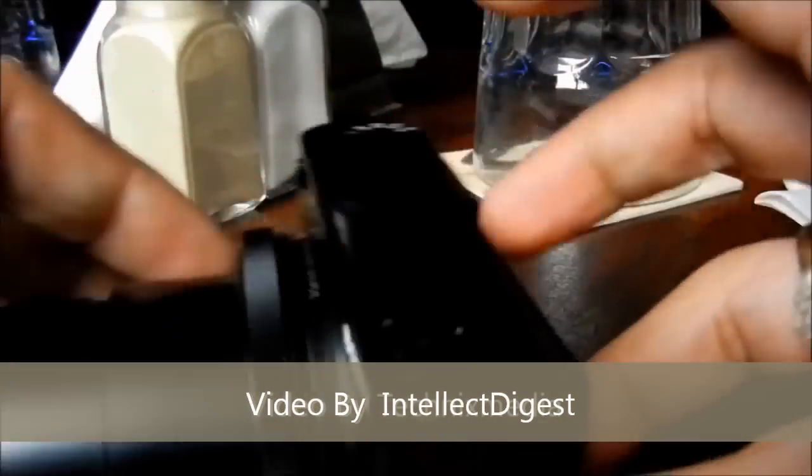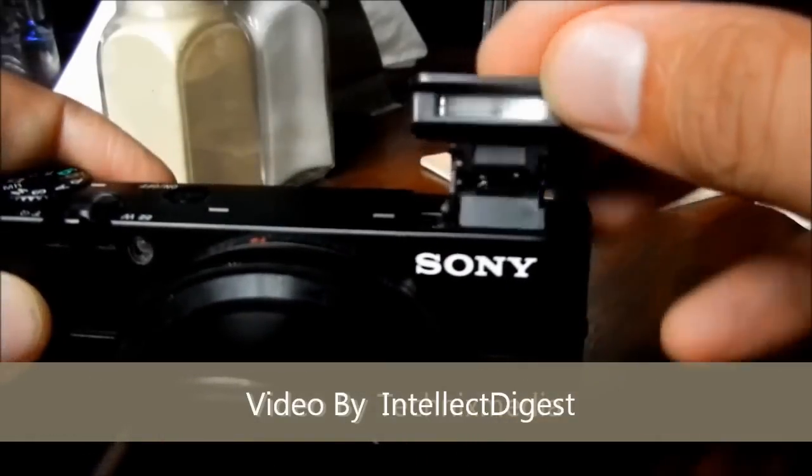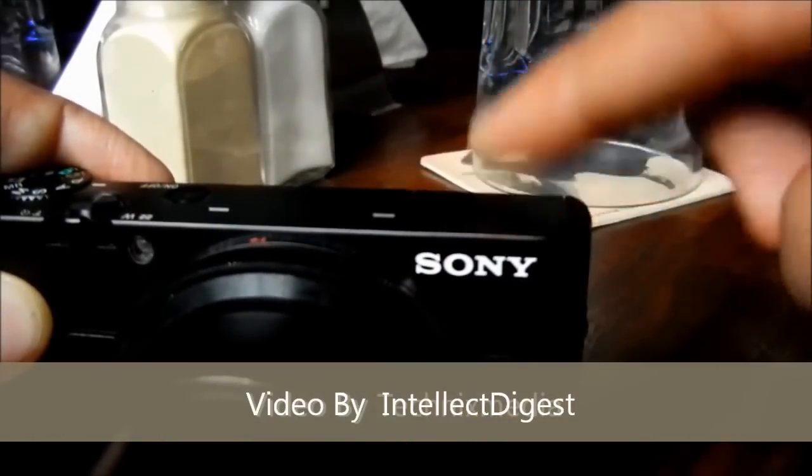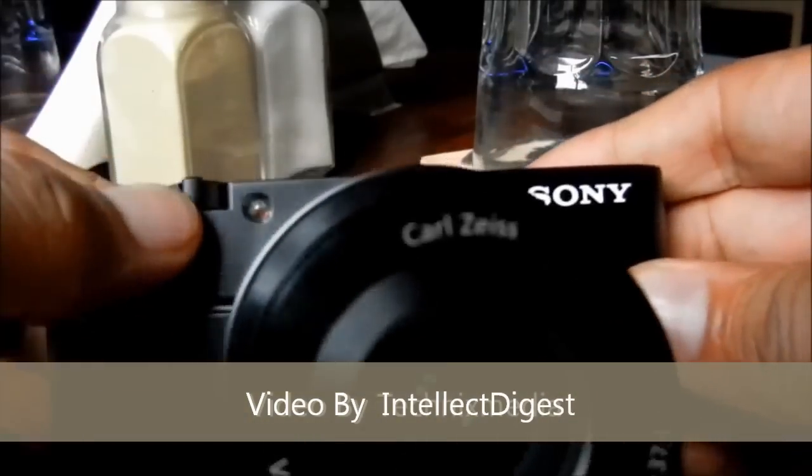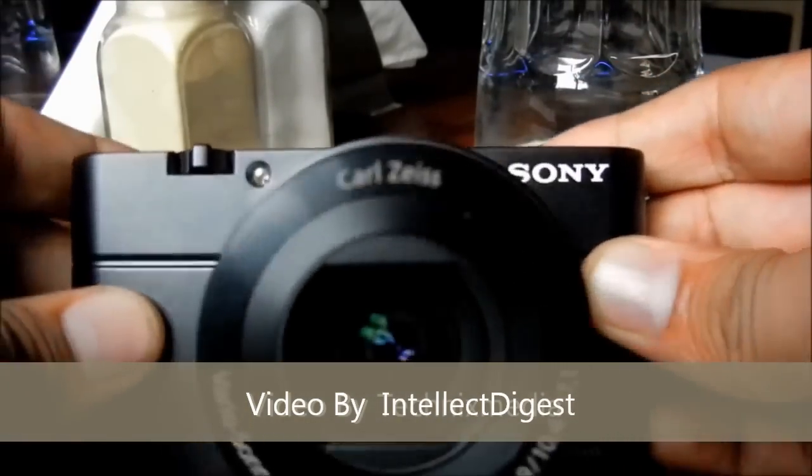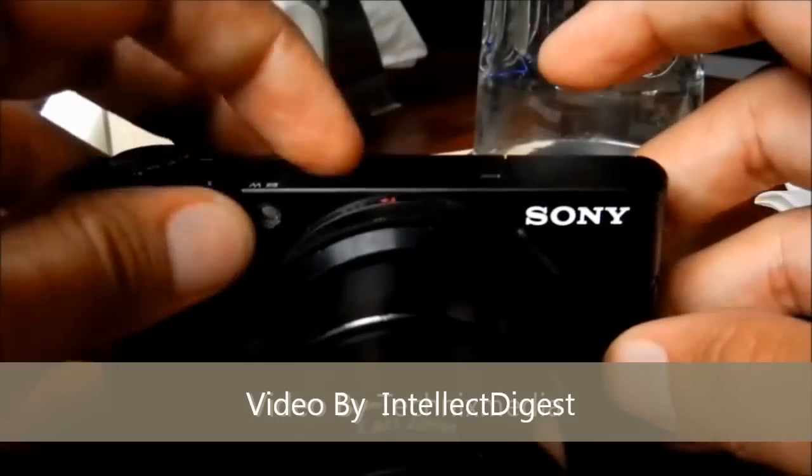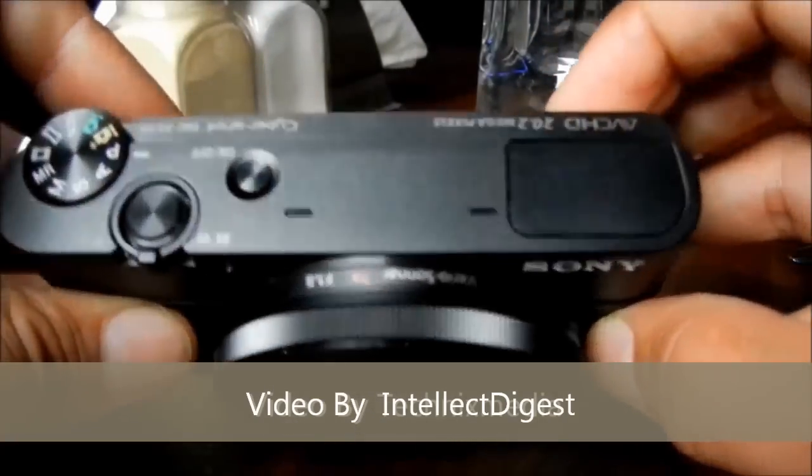Here what you see is a pop out flash. It comes out whenever it is needed or whenever it is turned on. You can put it back inside simply. So no need of an additional external flash. So whatever you need for high quality photographing can be compactly fitted in your pocket. Simply turn it off and it becomes very compact, easy to hold in hand.